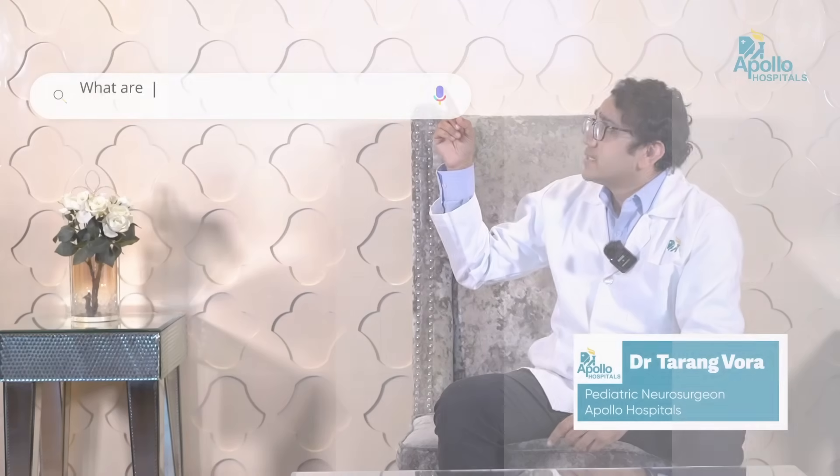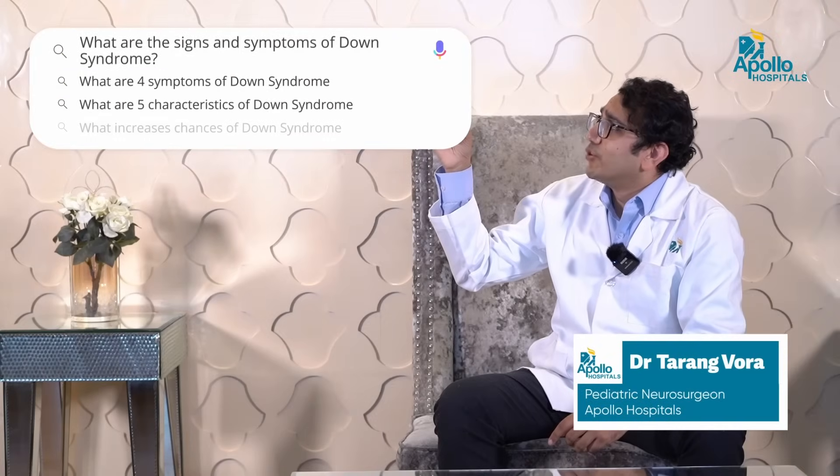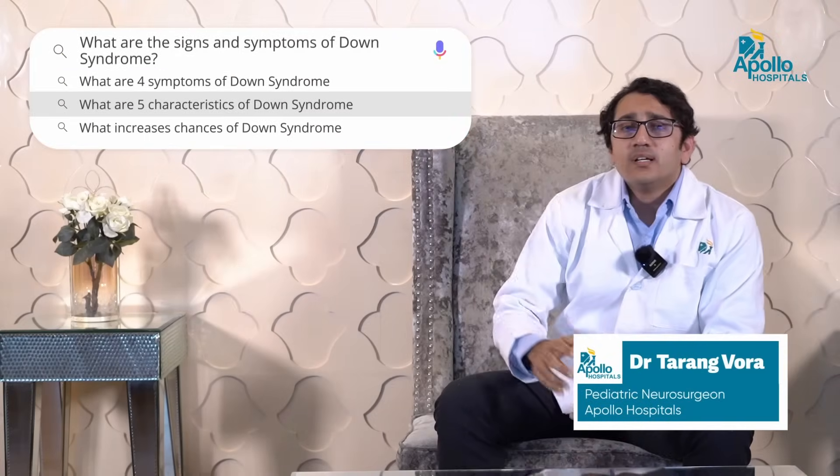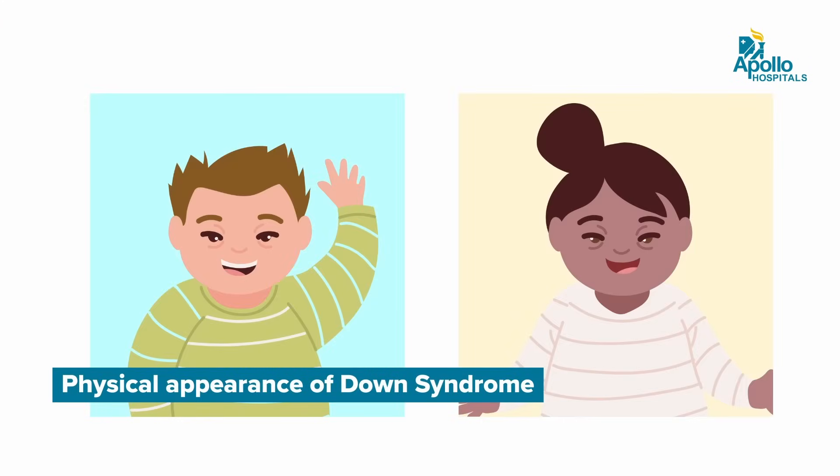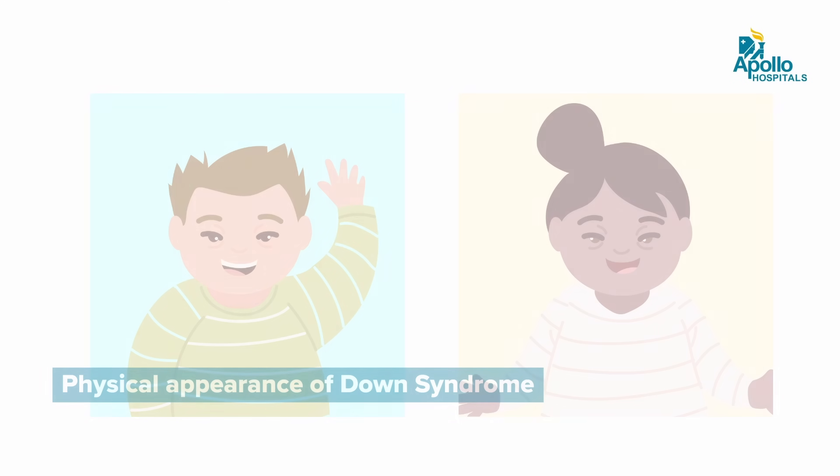What are the signs and symptoms of Down syndrome? Basically, there are no symptoms of Down syndrome because it is not a disease. But once a child is born, we can notice a certain physical appearance of the child, based on which a doctor is able to suggest that maybe the child has Down syndrome.